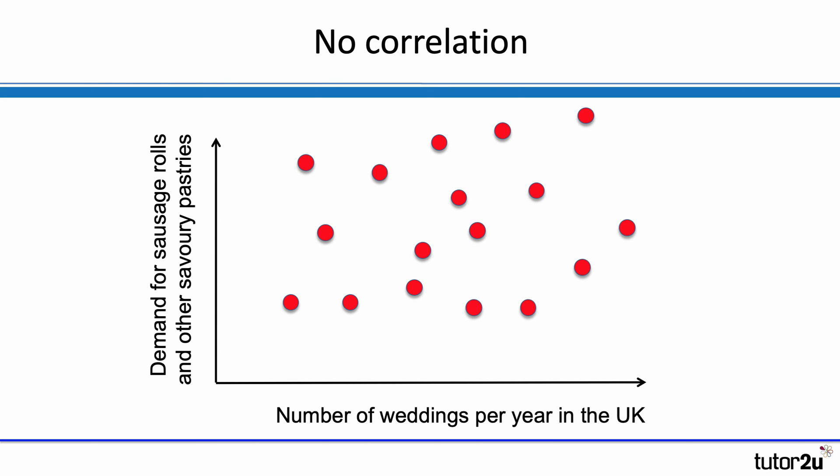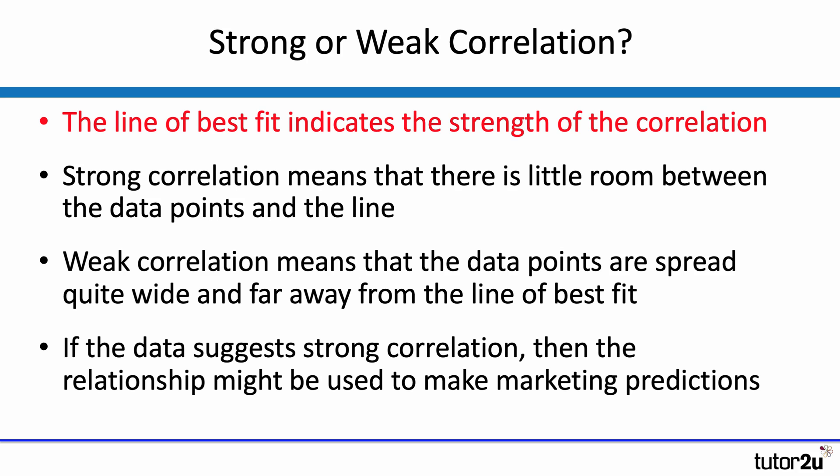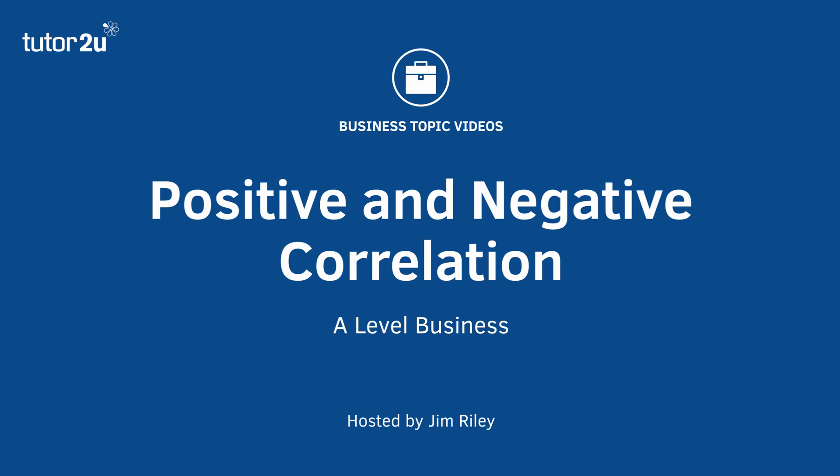And here's an example where the data suggests there's no correlation. In this case, we've tried to plot a relationship between the number of weddings per year in the UK and the demand for sausage rolls and savoury pastries, including vegan sausage rolls. You can see from the data plotted there that there isn't really a clear relationship between the two of them — and neither would you expect there to be. Last thing to say: don't forget correlation is about the relationship, but it's mainly about the strength of the relationship. It can be positive or negative. Strong correlation means there is little space between the data points and the line of best fit, which means there is a predictable relationship. A weak correlation says there is a relationship, but it's not quite as predictable. No calculations involved — hopefully that's a useful introduction to positive and negative correlation.